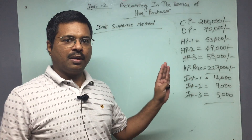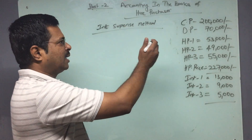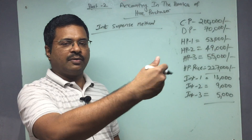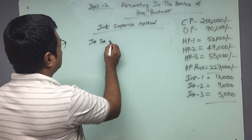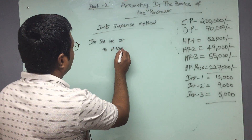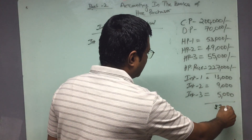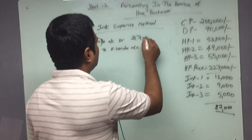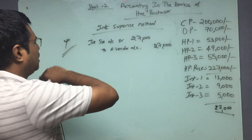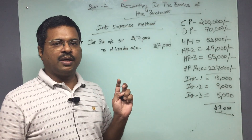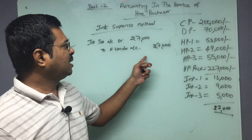Under the interest suspense method, the entire interest is accounted for at the beginning of the first year itself. Asset purchase is recorded the same way — asset account debit to hire vendor, down payment hire vendor to bank account. Then I will record: Interest Suspense Account debit to Hire Vendor Account for the total interest of 27,000. At year zero, when recording the asset, I create a liability for the gross interest for all three years — the entire three years' interest is debited to Interest Suspense and credited to Hire Vendor.